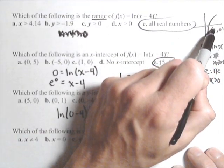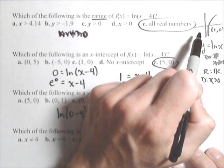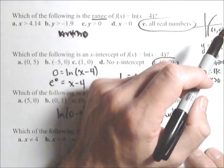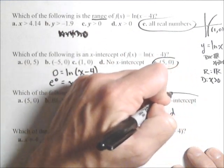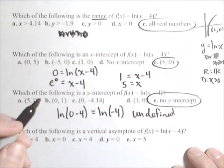Well, because we're shifting this to the right, it's not going to hit the y-axis. If we had shifted this to the left, if we were doing ln of x plus 4, we would have had a y-intercept. So, no y-intercept.